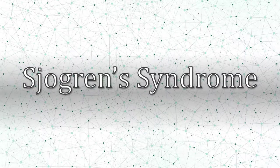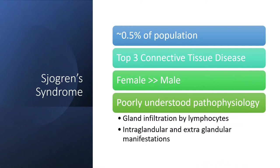Today we're going to talk about a condition called Sjögren's syndrome. It is a relatively common condition in rheumatology, though overall rare, affecting about 0.5% of the population. It's one of the top three most common connective tissue diseases — things like lupus and so forth — which are sometimes considered cousins or in the same family.